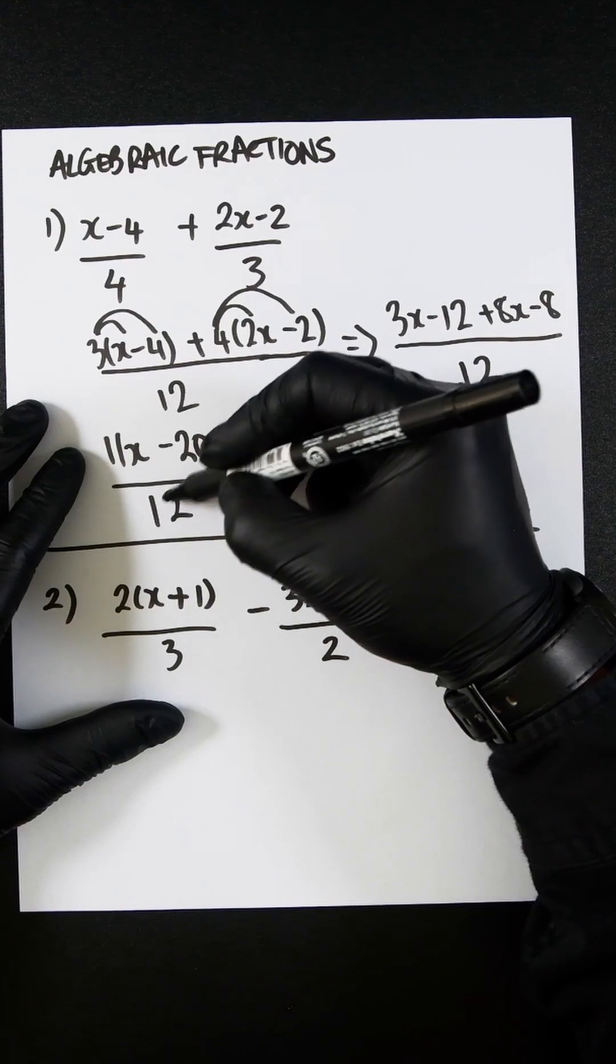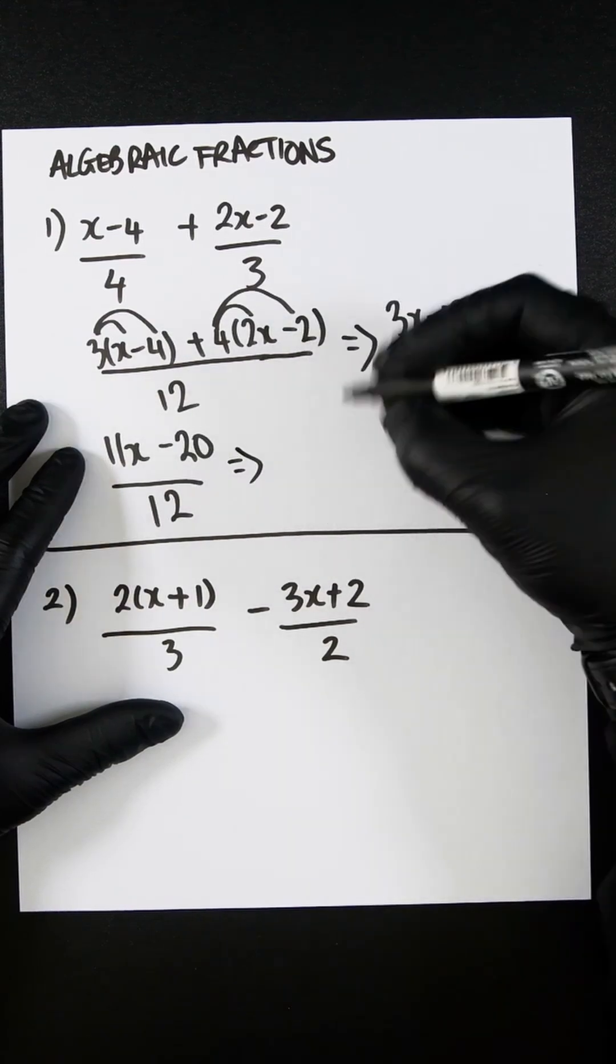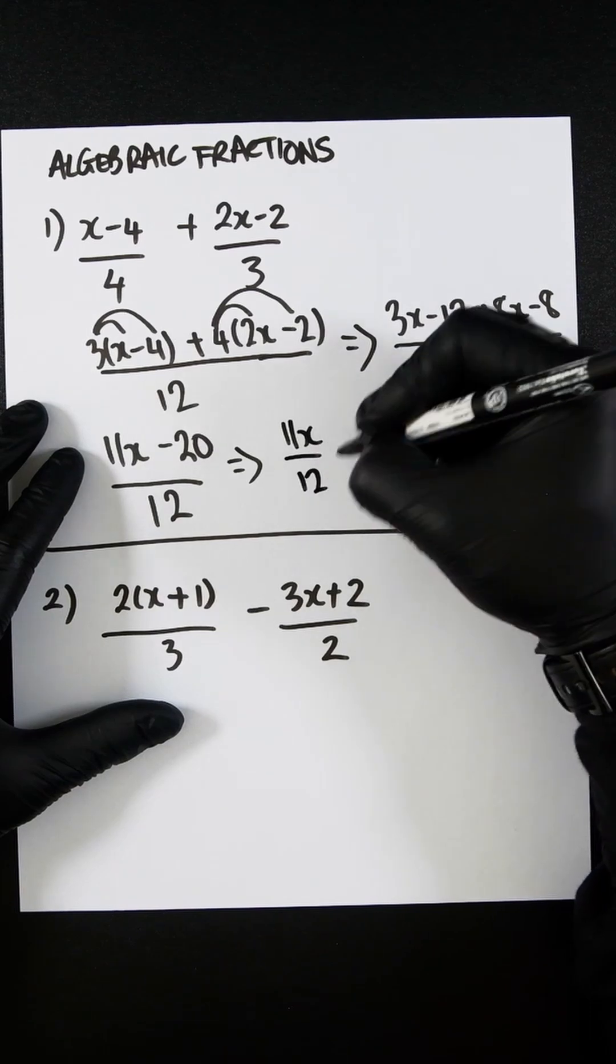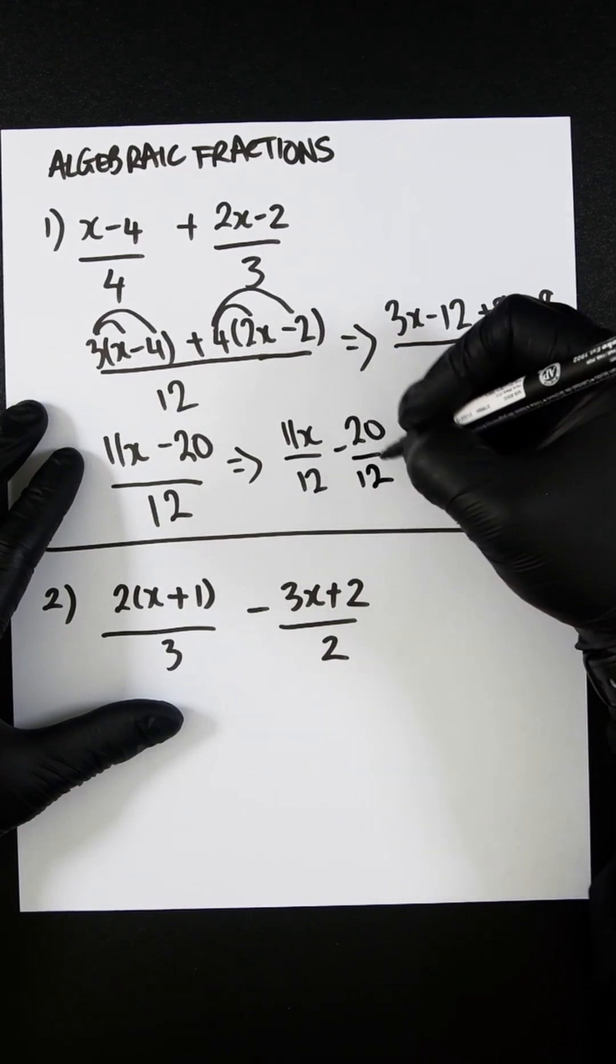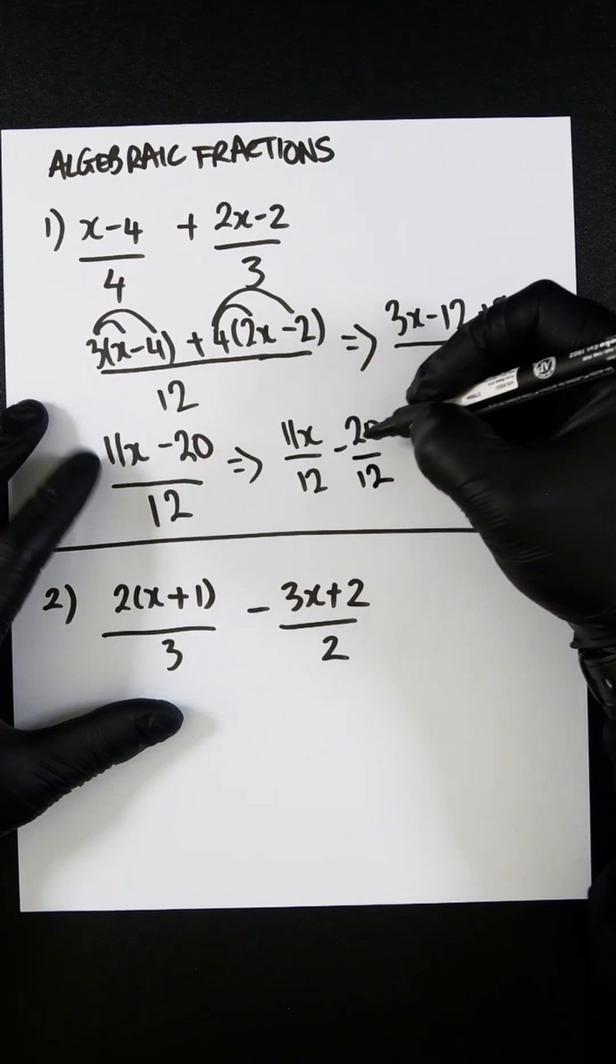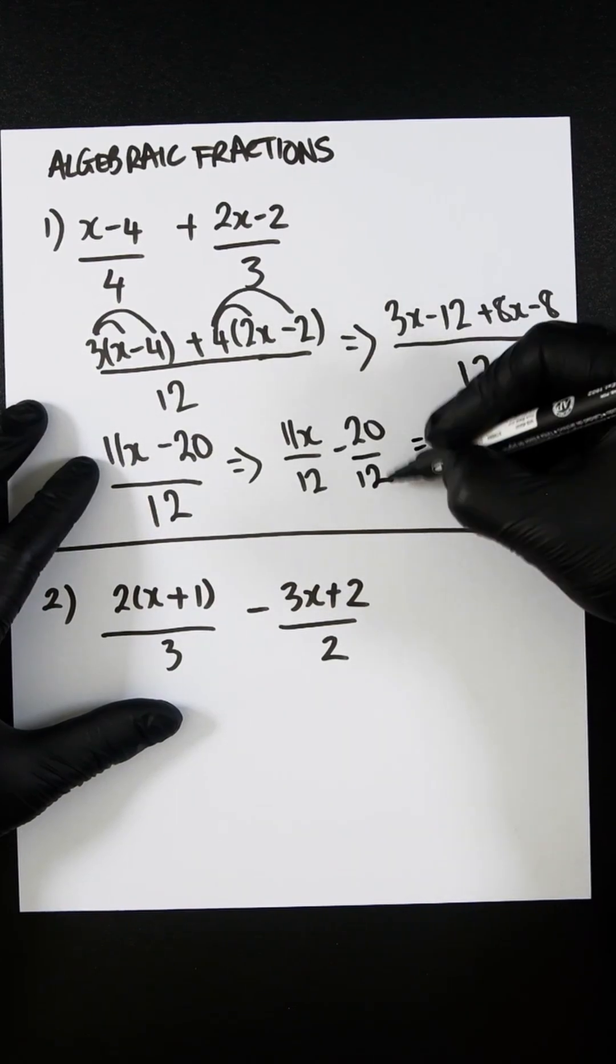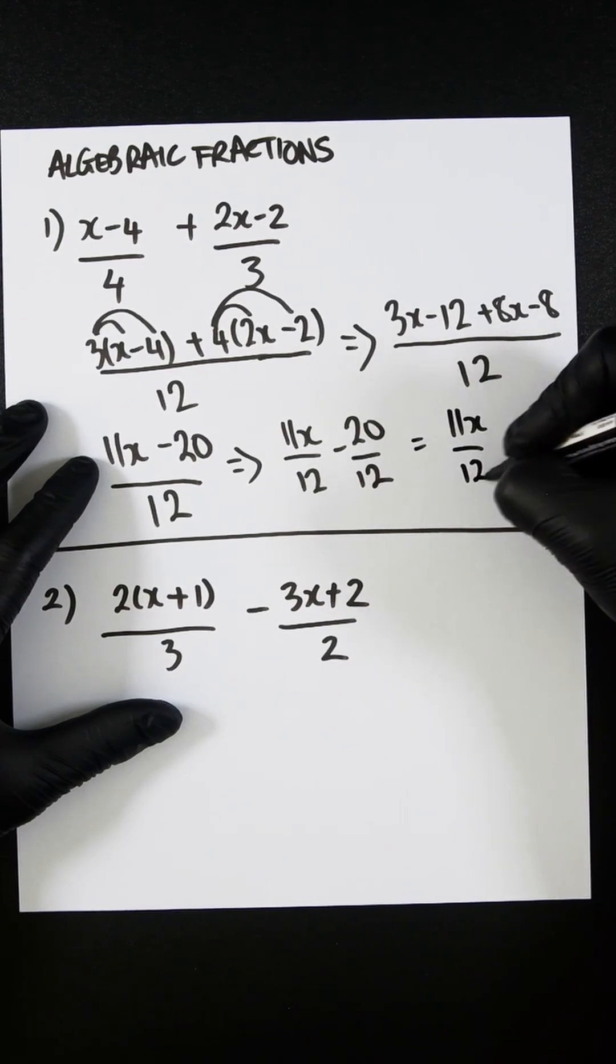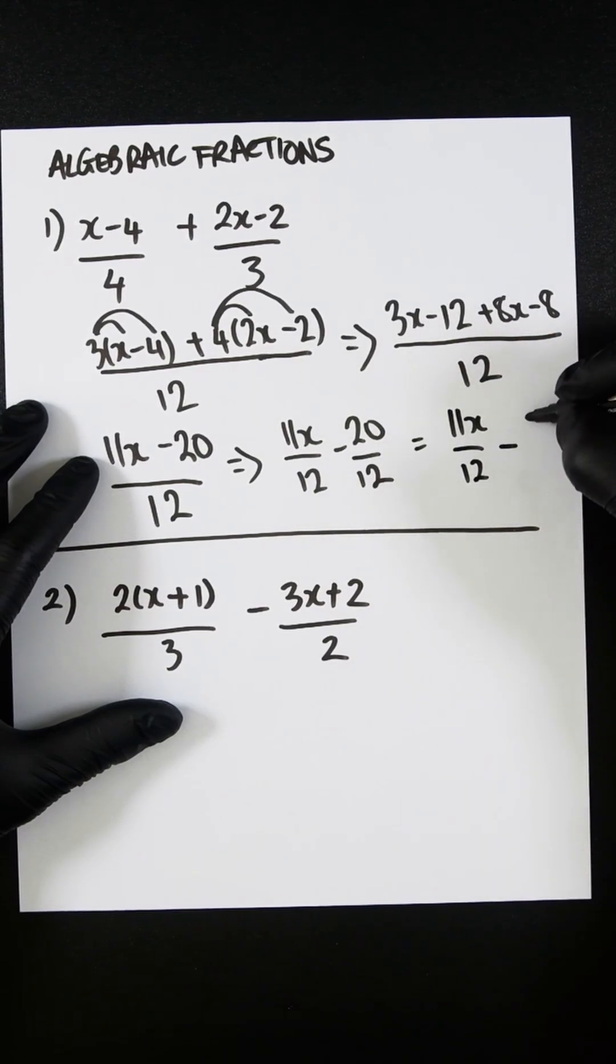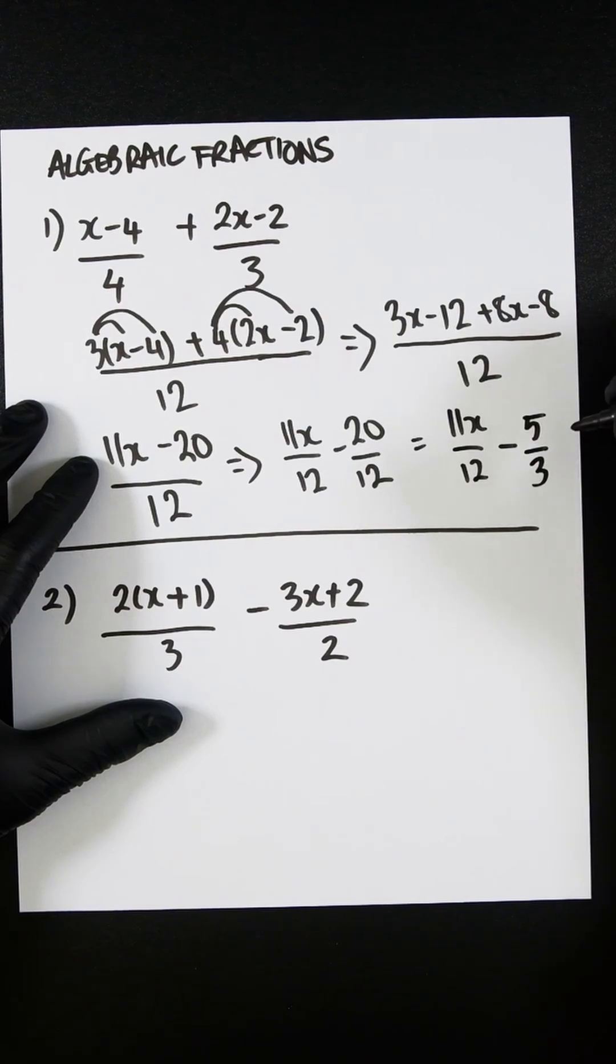this denominator is applied to both parts of the numerator. So 11x over 12 is the same as minus 20 over 12. So this and this is exactly the same. We can simplify this a bit more. So it would be 11x over 12 minus 5 over 3.